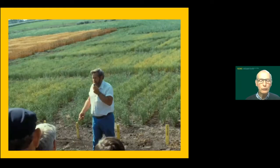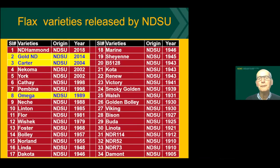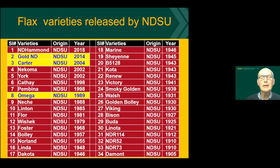NDSU has worked with flax for many years and has had several breeders. This honors our breeder Jim Hammond, who passed away a few years ago but was very instrumental in variety development. NDSU has a long track record of variety release, and here is a list of varieties and the year they were released — from 1905 at the bottom right all the way to 2018 at the top left, when the latest variety was released and named after Dr. Hammond.